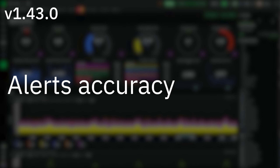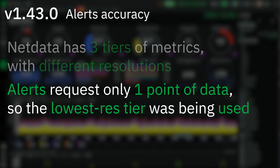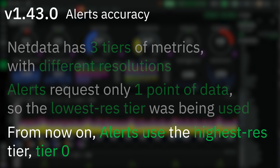Alerts accuracy. NetData has by default three tiers of metrics, each with a different resolution. The NetData Query Planner automatically picks the right tier to satisfy a query based on the number of points requested in the response. For alerts there was a side effect: since alerts request only one point of data in the response, the query planner was picking the easiest tier to query, which is the one with lower resolution. Now alerts are always run on the highest resolution one — tier 0.